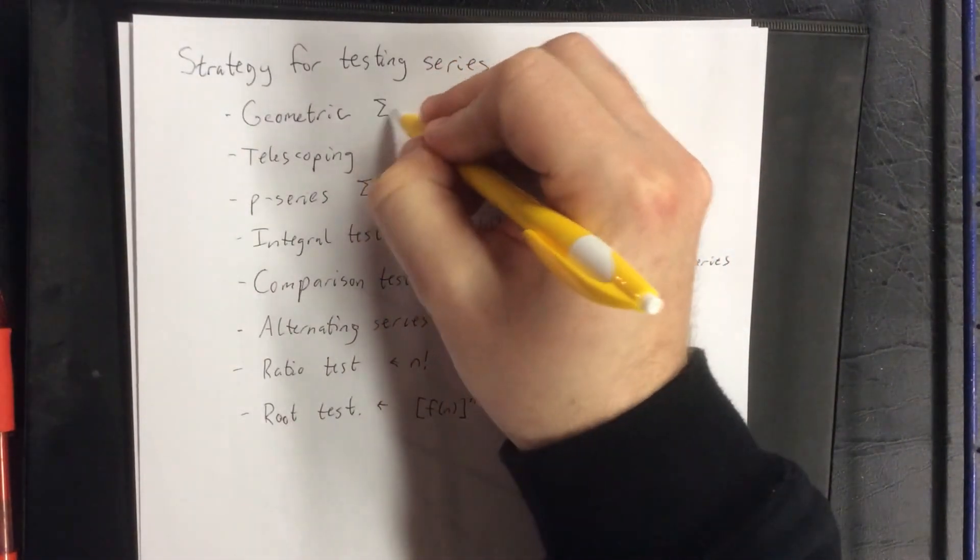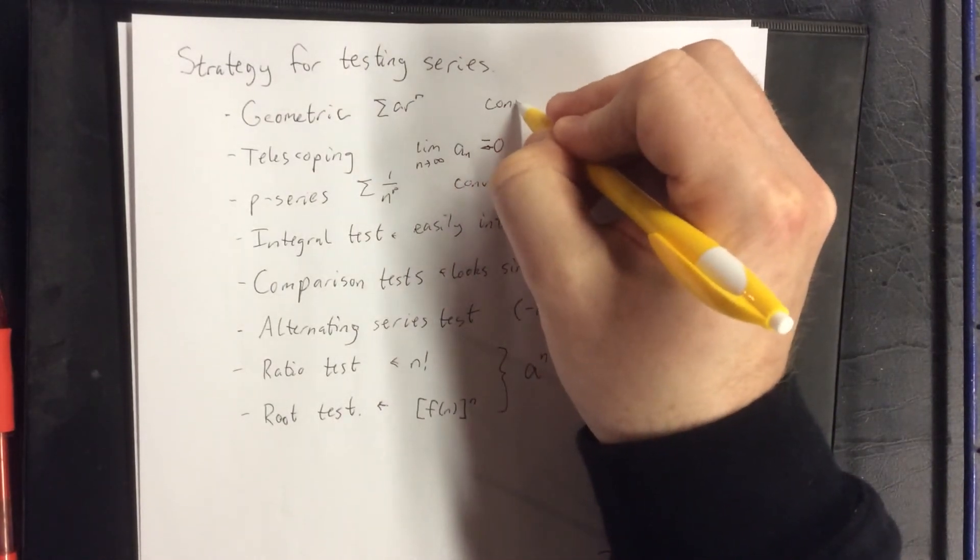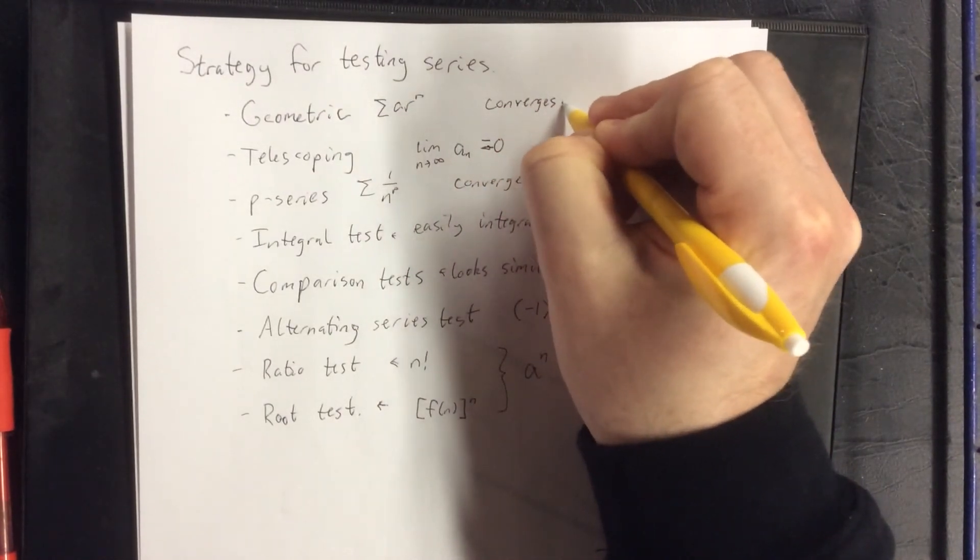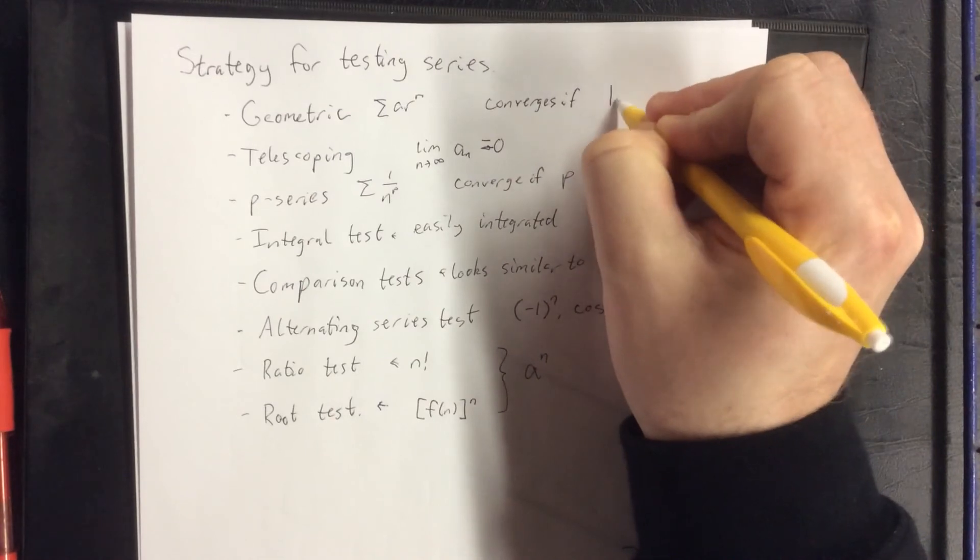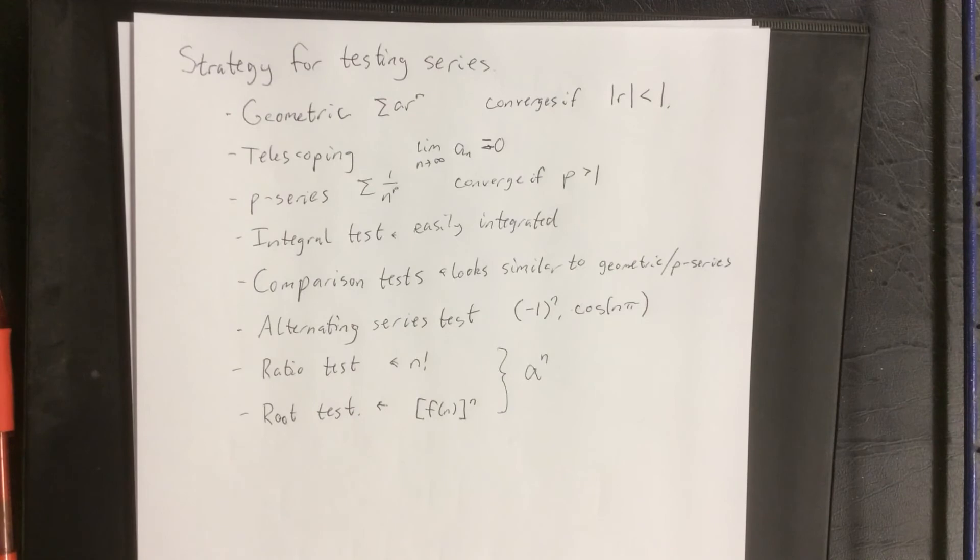And geometric was of the form a times r to the n and converges if the absolute value of r is less than one. So these are the kinds of things to look for.